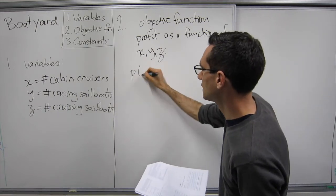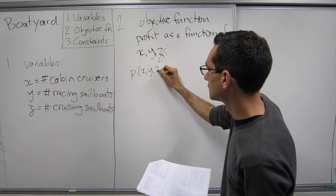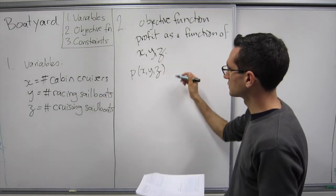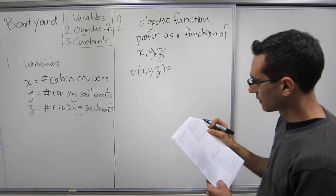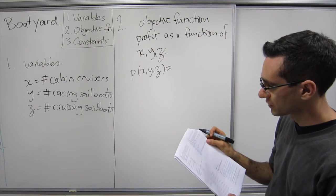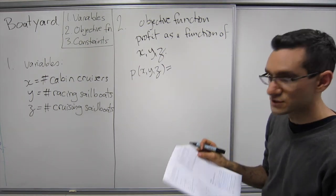So that's P(X, Y, Z) be the objective function. Looking at the problem the net unit profit on each kind of boat is 5,000 for each cabin cruiser,